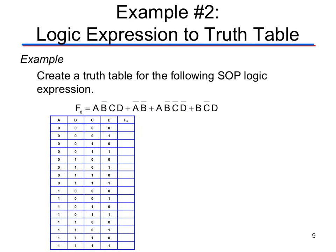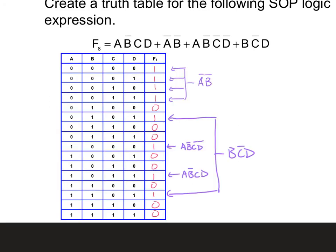Now it's your turn — take that expression and fill in the truth table. Pause the video, try it out, and see if you get the right answer. Here is the answer you should have gotten. For NOT A and NOT B, you're marking every single scenario where A and B are both off at the same time — anywhere you see both of those columns are 0 at the same time, mark the output as 1.